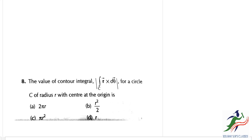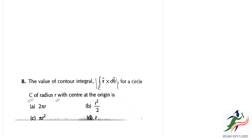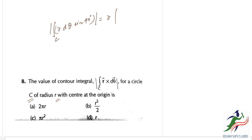Moving on, the next question asks for the value of the contour integral — the integral over circle C of r dθ, for a circle C of radius r with center at the origin. We have the integral over C of dθ times sin 90 degrees, which equals r times the integral over C of dθ, and this equals 2πr. The answer is option A.